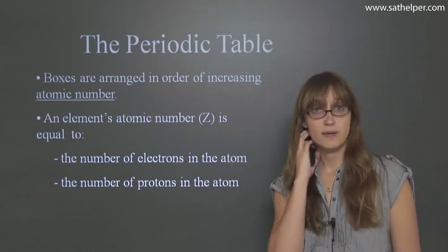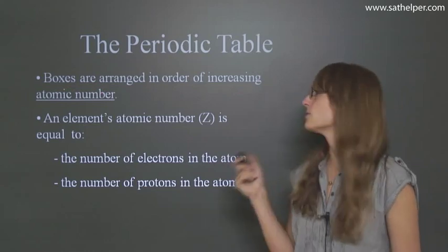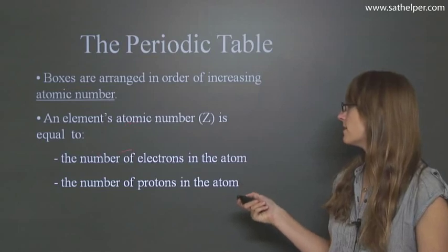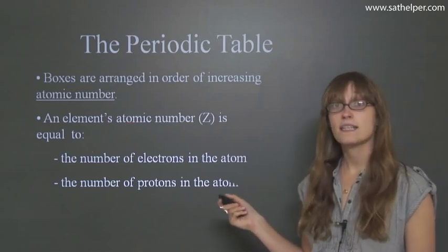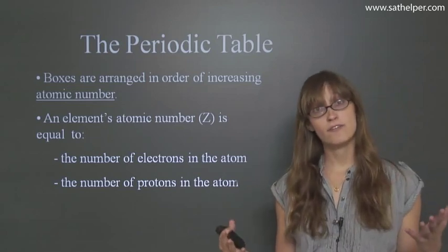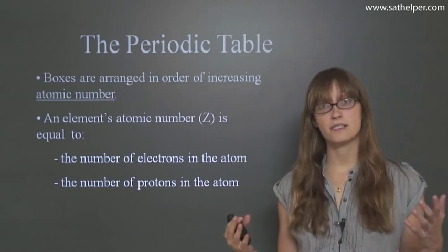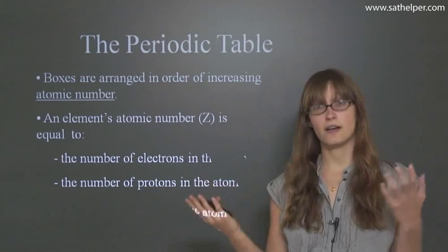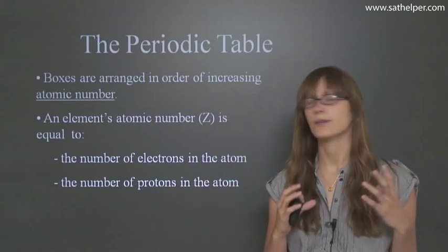So in our last lecture, we talked about the atomic number and how it tells you that it's the number of electrons in an atom and the number of protons in an atom. And it's often called Z. So if in a problem you ever see that an element's Z equals a number, you know Z is referring to the atomic number.